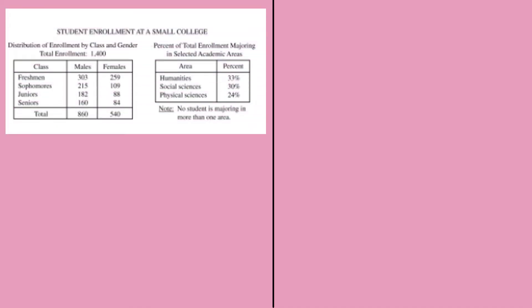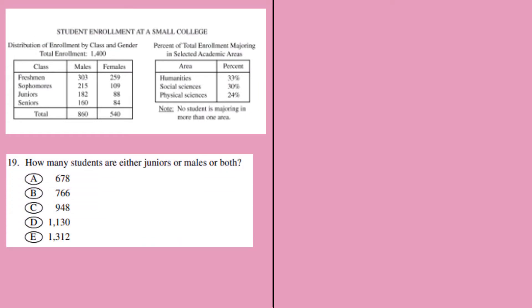The first question has a table. We have two tables: one representing the total enrollment of 1,400 with different male and female students in classes like freshmen, sophomores, juniors and seniors. The second table talks about the different majors enrolled in subjects like humanities, social sciences, and physical sciences.